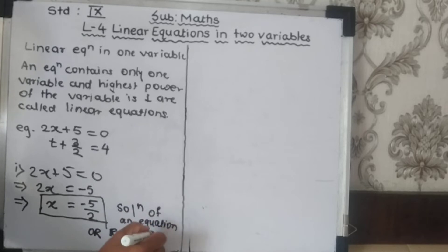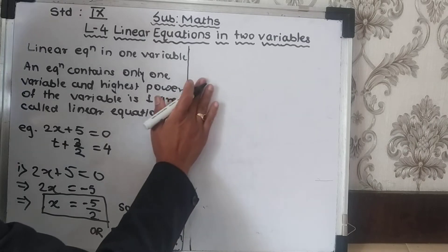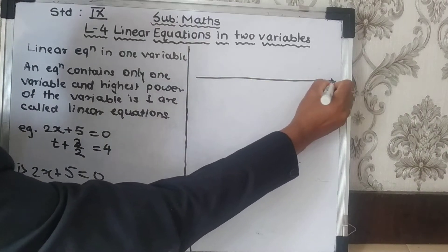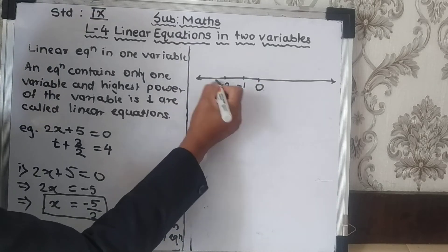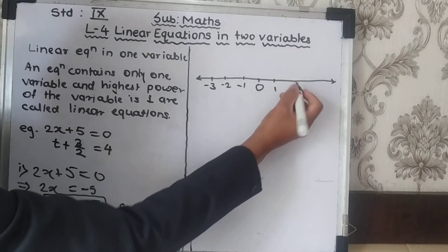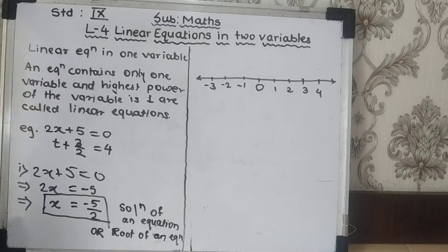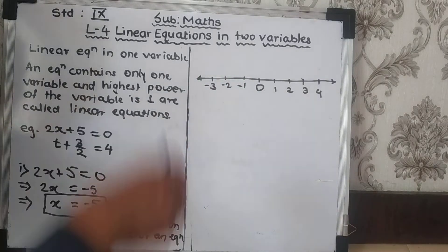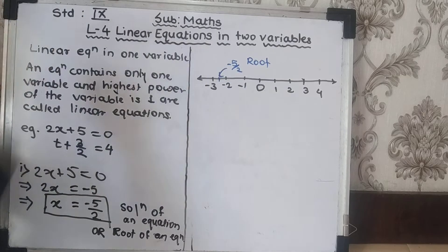Now, if we represent this on a number line — whenever we draw a number line, we use a pencil and scale. We show 0, all negative numbers to the left with equal distance, and all positive numbers to the right. This -5/2 will lie in between -2 and -3. So we mark -5/2 there, and this is the root of the given equation.